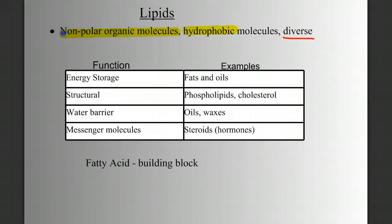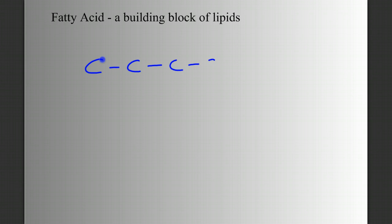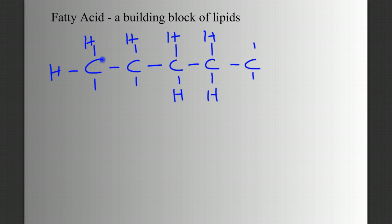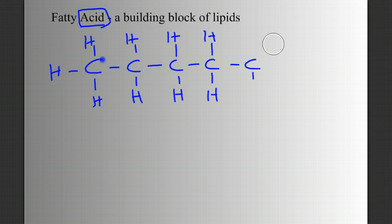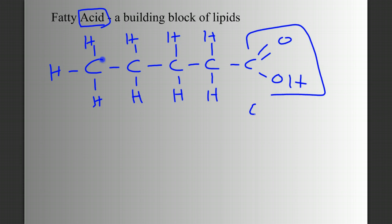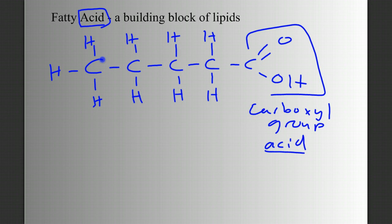The building blocks of lipids are fatty acids. To draw a fatty acid, we simply start with a hydrocarbon chain. We're going to make it slightly different by adding a functional group. It's a fatty acid — so which functional group was acidic? The functional group that is acidic is the carboxyl group. So the simplest way to make a fatty acid is to take a hydrocarbon chain and add a carboxyl group on the end.